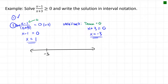We test points between the critical points to see whether the inequality is true or false in each region. We pick x = −4 to the left of −3, x = 0 in between, and x = 2 to the right of 1, keeping values small and easy to test.